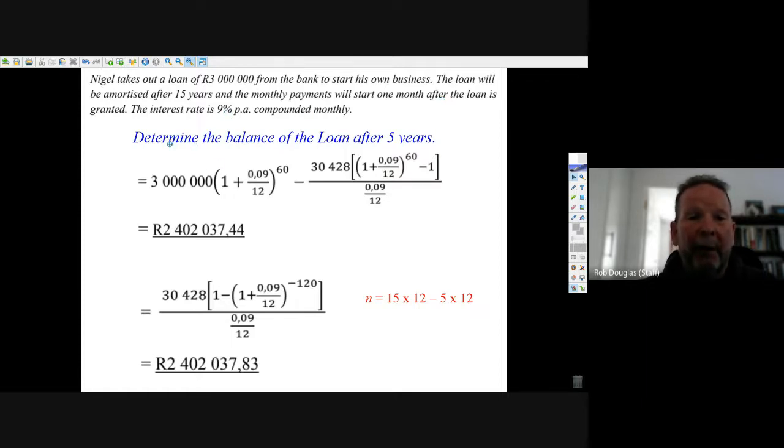The interest rate is 9% compounded monthly. If you had to figure out the balance of the loan after 5 years, well 5 years is 5 times 12. You could just grow the loan for 5 years, the interest would grow by 5 years, and then subtract what the future value growth would be to that point.